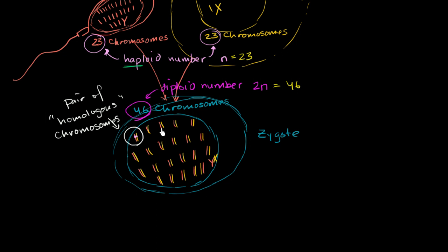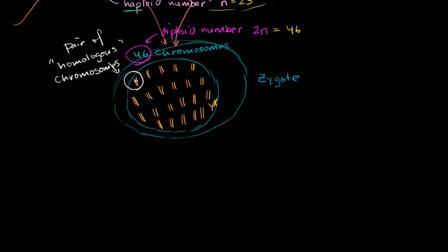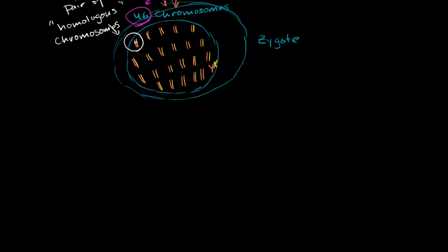I have my full contingency of chromosomes here. I got a Y sex chromosome from my father and an X from my mother, so I'm going to be a male. Through mitosis, this zygote is going to keep replicating.